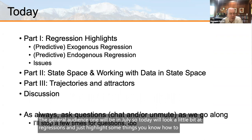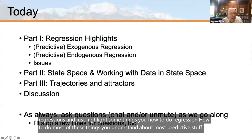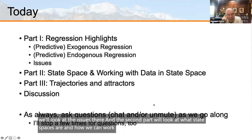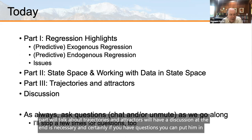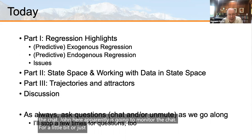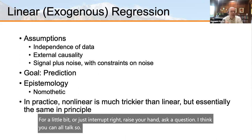Today we'll look at regressions and highlight some things. You know how to do regressions and predictive stuff. We'll look at the issues there. Second, we'll look at state spaces and how to work with data in state space. Third, we'll talk about trajectories and attractors. We'll have discussion at the end. John will monitor the chat, or you can raise your hand and ask a question.